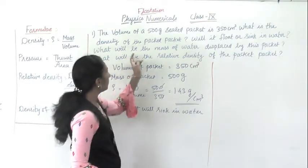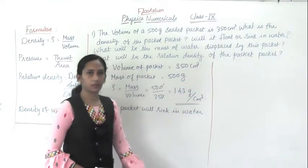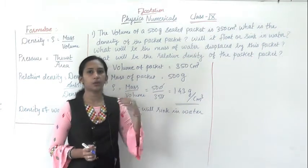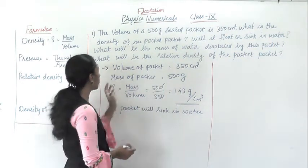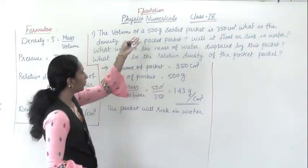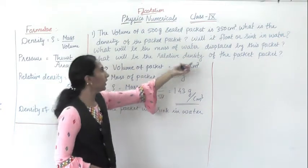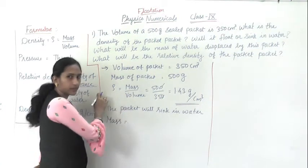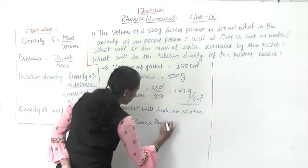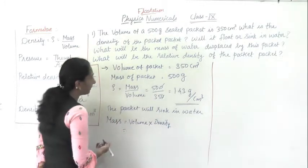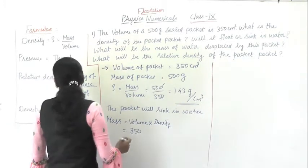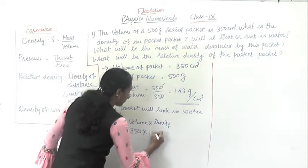Now the third problem: what will be the mass of water displaced by the packet? In Archimedes' principle, however much weight we put into water, the same amount of weight of water will be displaced out. Volume is already given as 350 centimeter cube, and we have to find mass. So mass equals volume into density. Substituting the values: mass equals 350 multiplied by the density of water, which is 1.